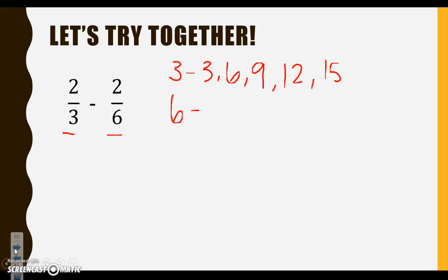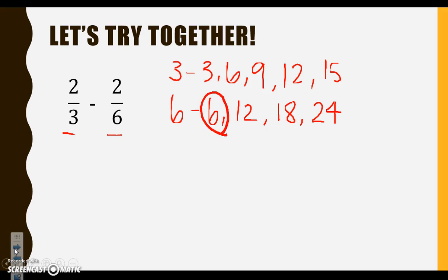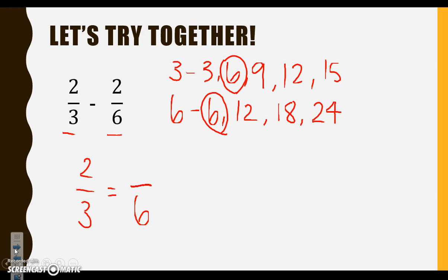Let's go to 6: 6, 12, 18, 24. Do we see a multiple that they have in common? We sure do — we have 6 in common. Let's start with 2 thirds. We want 2 thirds to turn into a fraction with a denominator of 6.